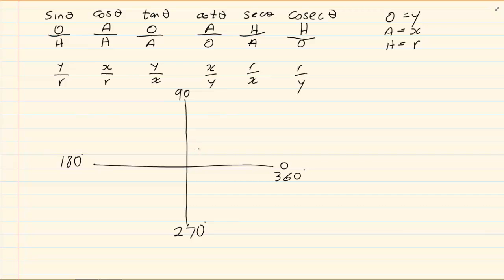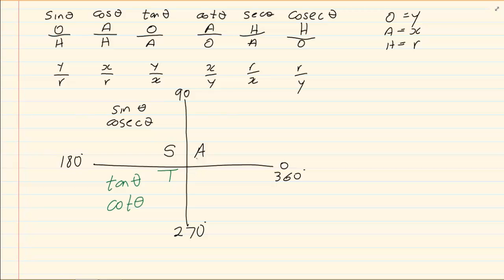We also know that in the first quadrant all ratios are positive. In the second quadrant only sin and cosec are positive. In the third quadrant tan and cot are positive. And in the fourth quadrant cos and sec are positive. We usually say 'all students take coffee' to remember this information.